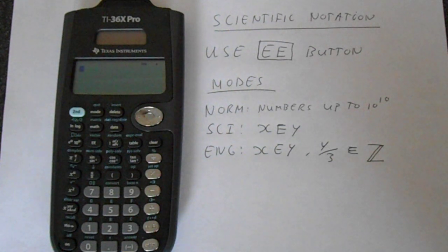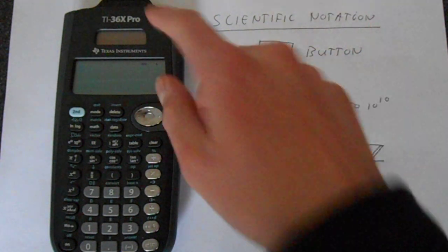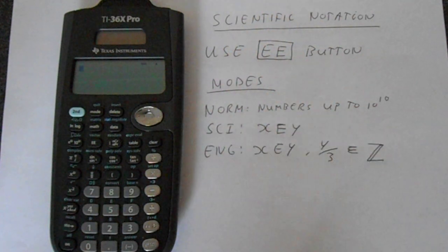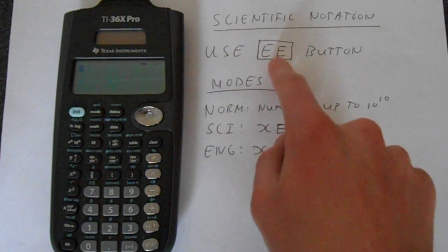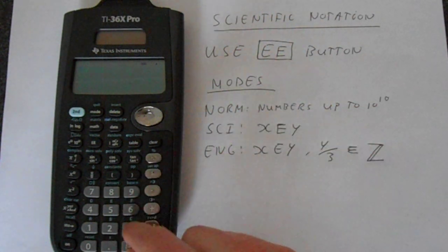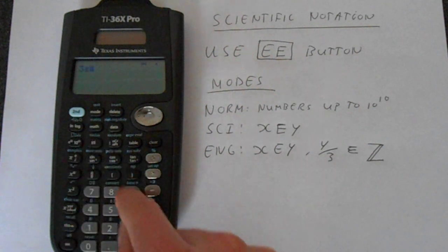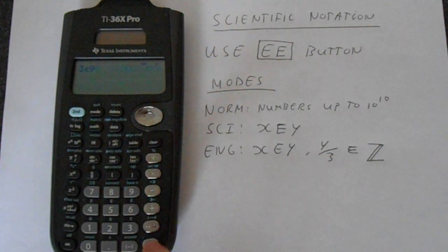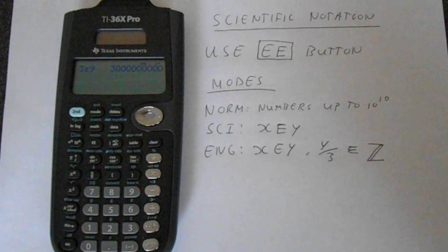In this video I'm going to show you how to work with scientific notation on your TI-36X Pro. If we're going to use scientific notation, we simply use this EE button. So we could do like 3 and then EE, which is located here, to the power 9, and that gives us that.